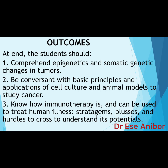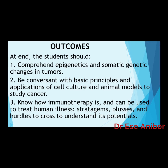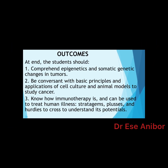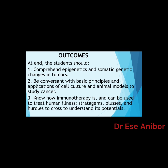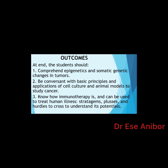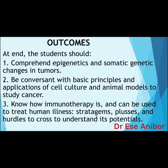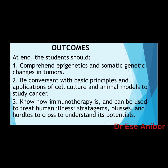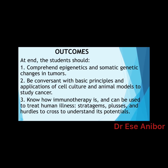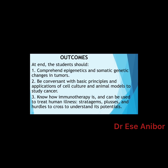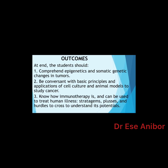What are the outcomes — the level of knowledge students need to display at the end of this study? The students need to comprehend epigenetics and somatic genetic changes in tumors. They need to be conversant with basic principles and applications of cell culture and animal models to study cancer, and know how immunotherapy is and can be used to treat human illness.